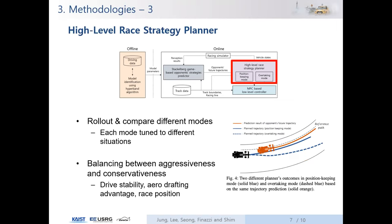Based on the prediction results, we roll out different modes — position-keeping and overtaking modes — to compare which gives the best result. Each mode is tuned to the track shape, whether straight or curved, and overtaking feasibility. This division of modes gives a practical advantage that we can utilize our high-level intuitions separately for each commonly seen situation. Every mode has to balance between aggressiveness and conservativeness. Driving stability is more important on a curved track, while on a straight track, taking advantage of the drafting effect to gain more speed is critical to winning the race.